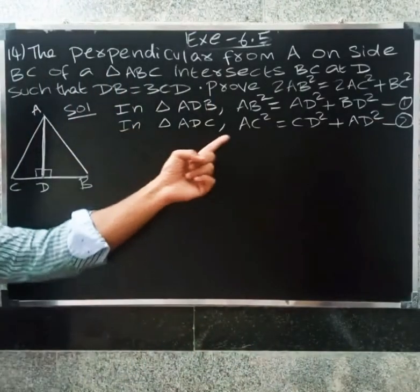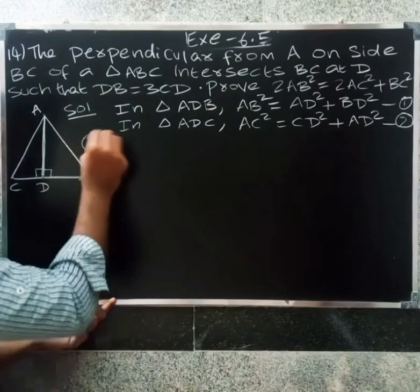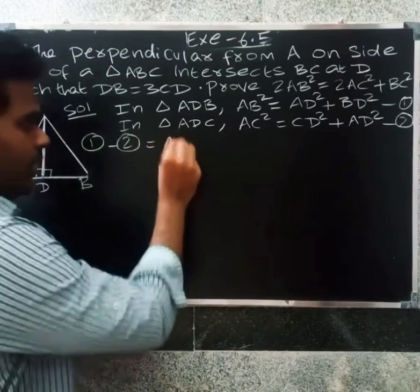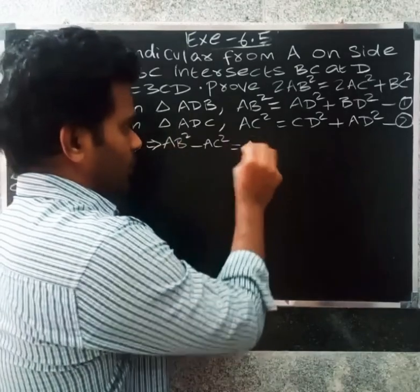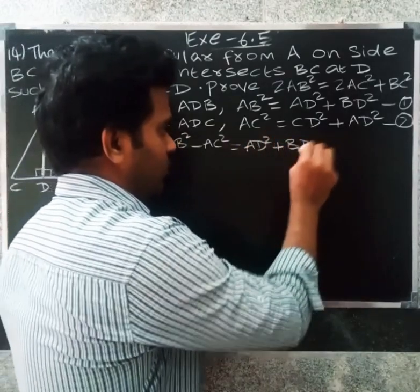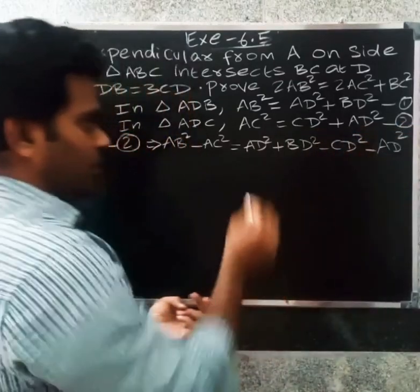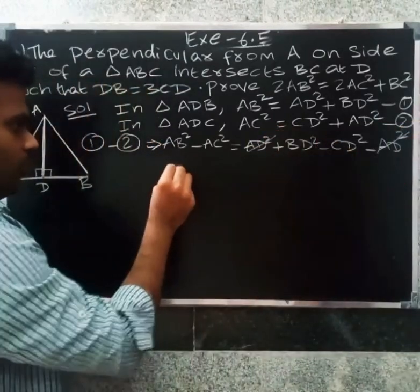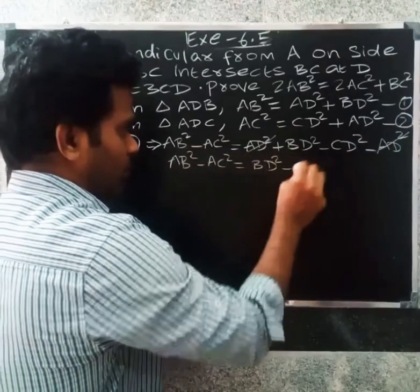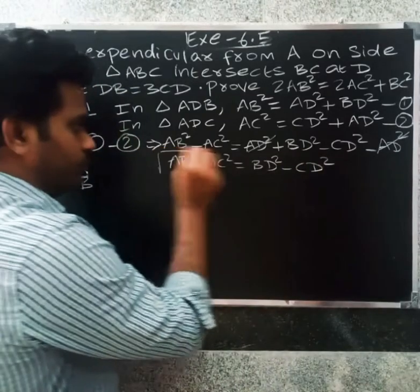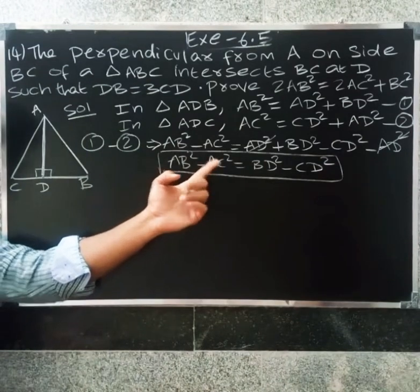Subtract the second equation from the first equation. So, equation 1 minus 2 gives AB square minus AC square equal to AD square plus BD square minus CD square minus AD square. The AD square cancels, so AB square minus AC square equal to BD square minus CD square.